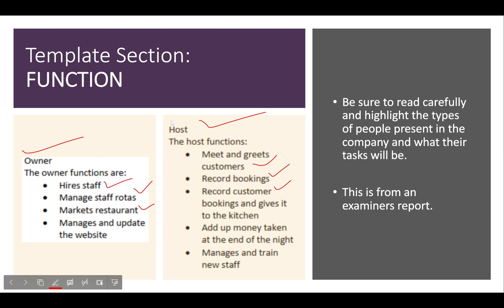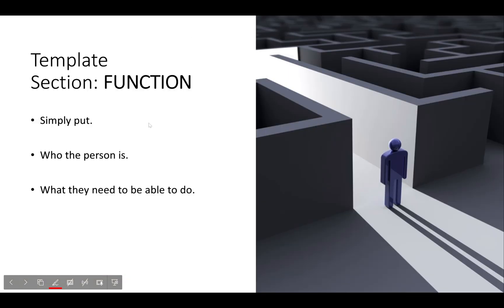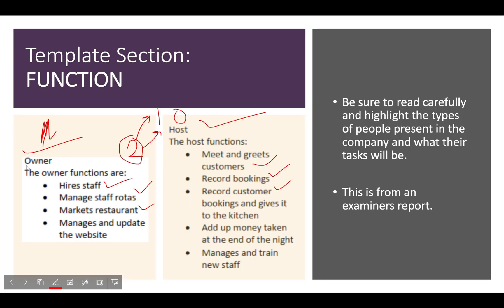You can have as many functions as you want based on the number of people in the company — one owner, ten hosts, two managers each overseeing five hosts, for example. This is just a basic example. Read your scenario and look at what each category of person needs to do. For function, simply put who the person is and what they need to be able to do.